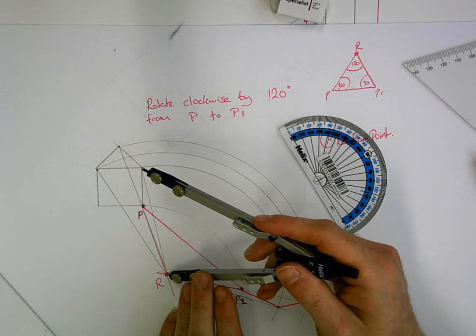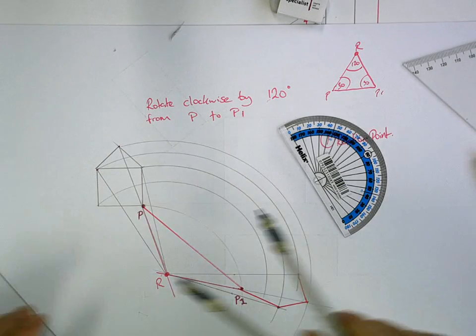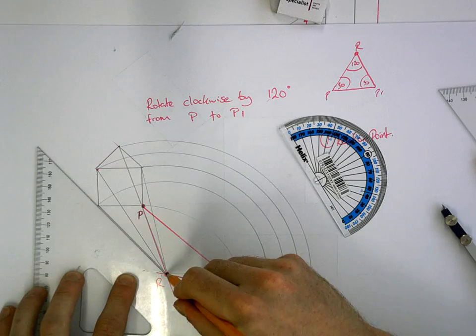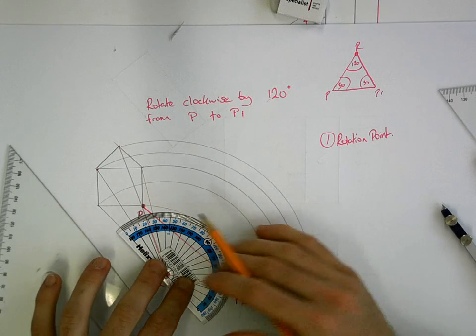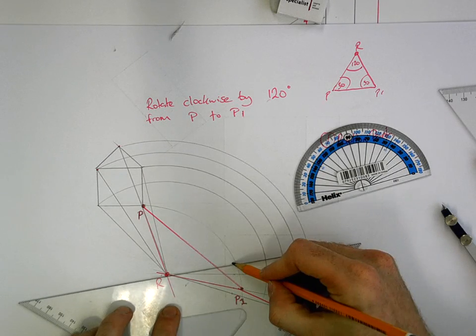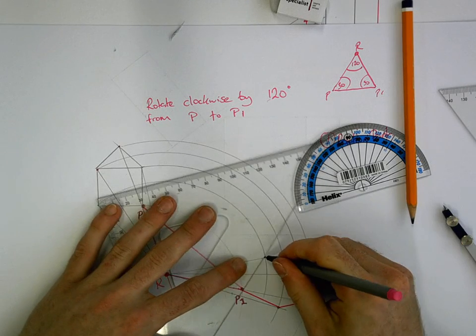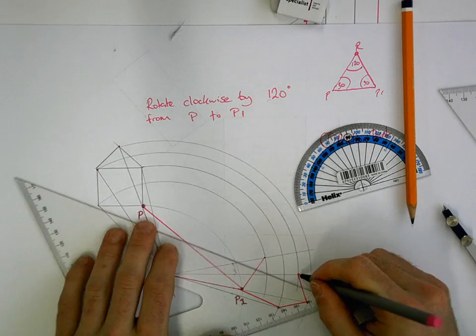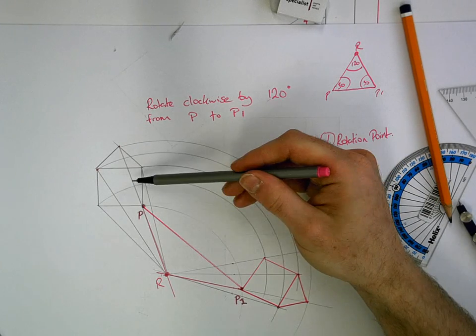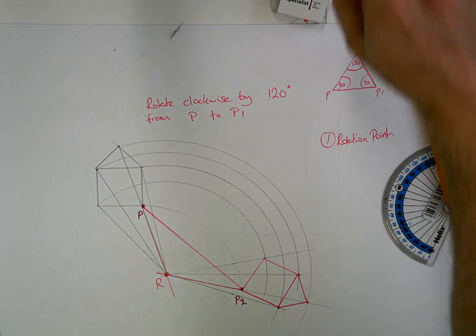Now we'll do the bottom corner. That's the last one I'll have to do. Swing it around. Go to the bottom corner. Join it to R. Go off at 120. Sit there. And that means we can complete our shape. Okay? So that's that house shape rotated by 120 degrees from P to P1. Okay?